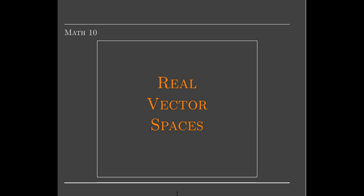In this short video, we're going to talk about real vector spaces. Real vector spaces may have objects in them which don't look like what we call vectors — they don't look like vectors in Euclidean spaces, but they act like vectors in Euclidean spaces.